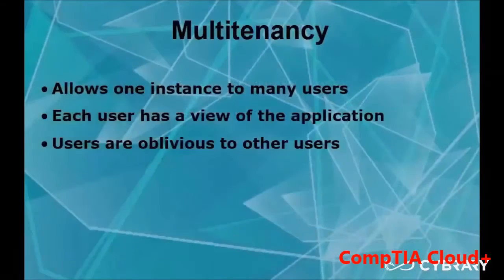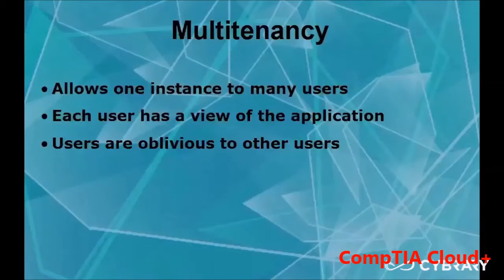Multi-tenancy allows one instance to serve many users. This is very important when it comes to database as a service — a user will be accessing a database, but at the same time a hundred other users will be accessing the same database. On multi-tenancy, they're each looking at their own instance — they're not looking at what their neighbor is doing — and they're able to perform their own functions without interfering with the people they're working with.